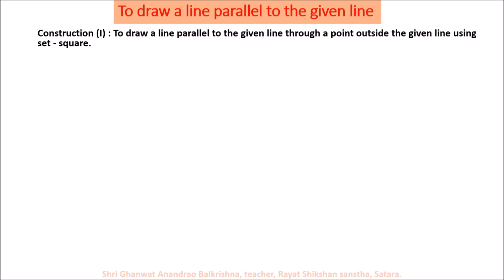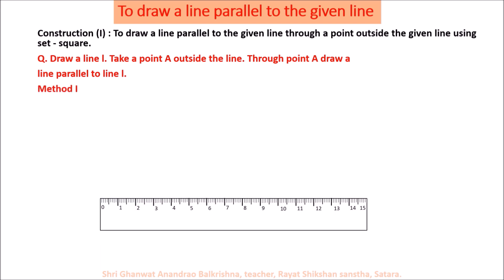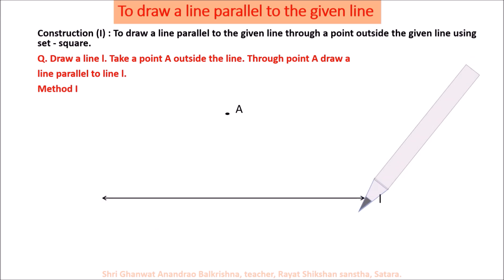Construction: how to draw a line parallel to a given line through a point outside the given line using a set square. Take a question: draw a line L and take a point A outside the line. We will do this with two methods. In method one, take a ruler and draw line L, then take point A outside line L.